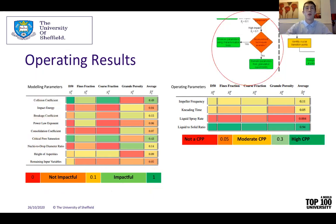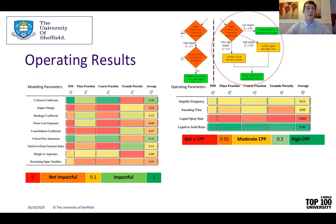Looking at the operating parameters, we have a different threshold criterion in this work to enable the number of levels needed in the experimental design. The results show the liquid-to-solid ratio has a very high impact and is very dominant for all four outputs, whereas the liquid spray rate has a very low average value and so is not a CPP. The remaining two operating parameters can be seen as moderate CPPs, just making the CPP threshold.